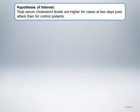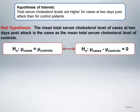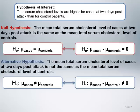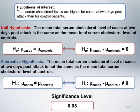The hypothesis of interest is that total serum cholesterol levels are higher for cases at two days post-attack than for control patients. We can state the null hypothesis as: the mean total serum cholesterol level of cases at two days post-attack is the same as the mean total serum cholesterol level of controls. Equivalently, this can also be formulated as a statement that the difference in means between cases and controls is zero. The alternative hypothesis is that the difference in means is not zero. We will perform the test at the standard significance level of 0.05.